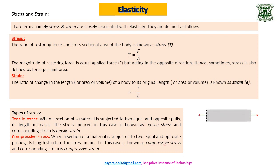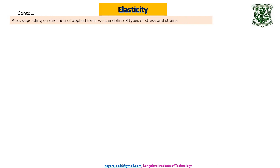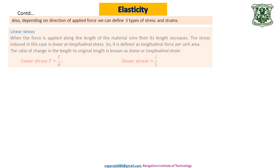Based on the direction of the applied force, we can define three types of stress and strain. Forces acting away from the body cause tensile stress with an increase in length; forces acting towards the body cause compressive stress with a decrease in length. Correspondingly, we have tensile strain and compressive strain. There is one more classification based on the direction of the applied force, giving us three types of stress and strain.